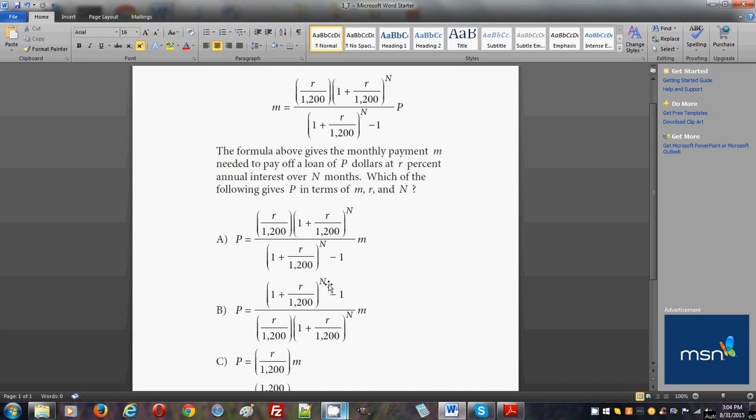The numerator, which is here, and the numerator of the original equation must become the denominator of the resulting equation because we're going to be isolating p.